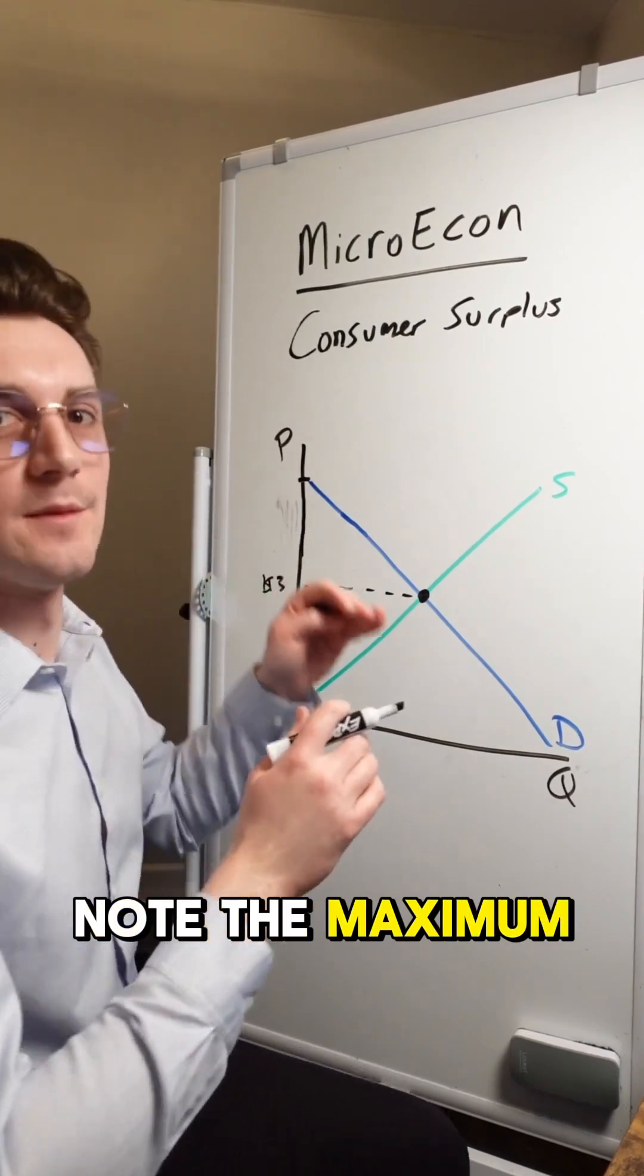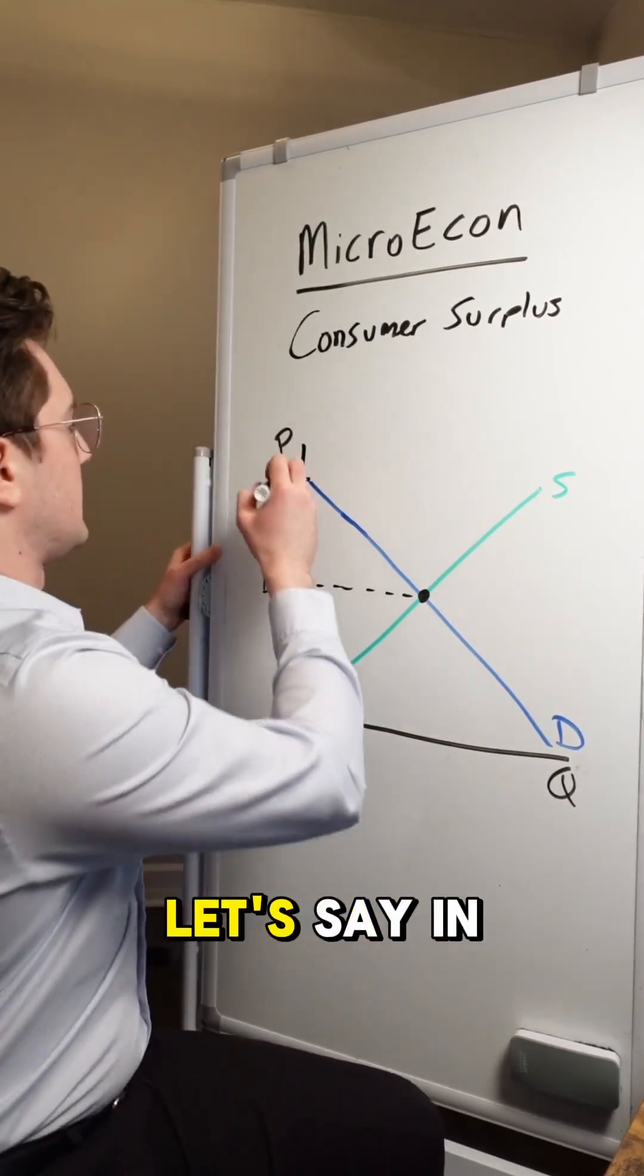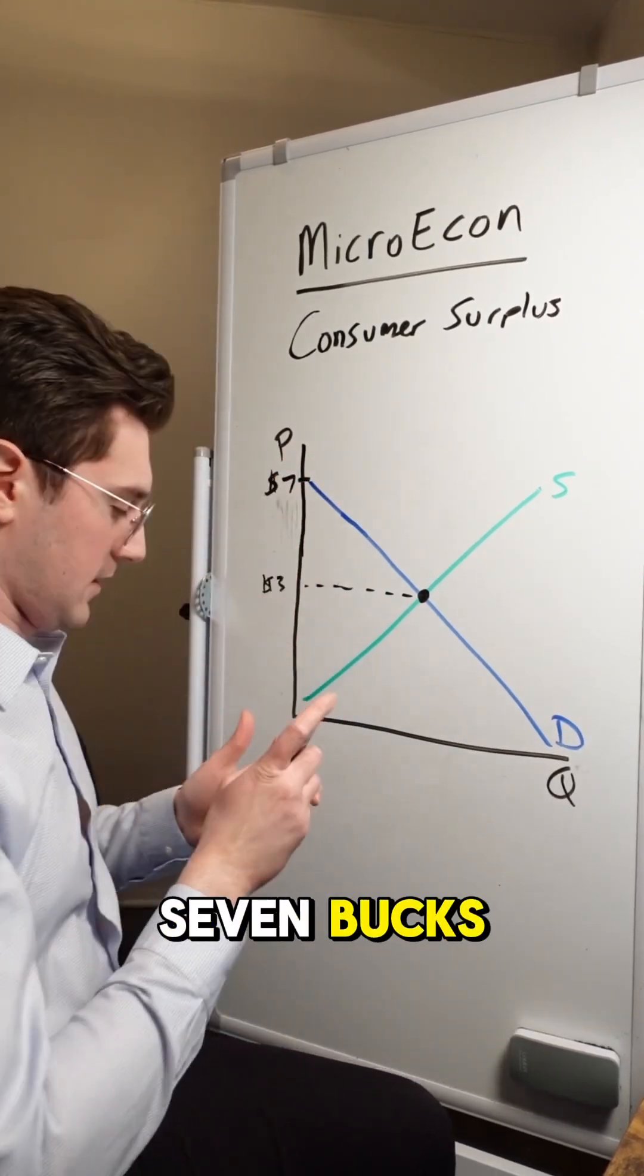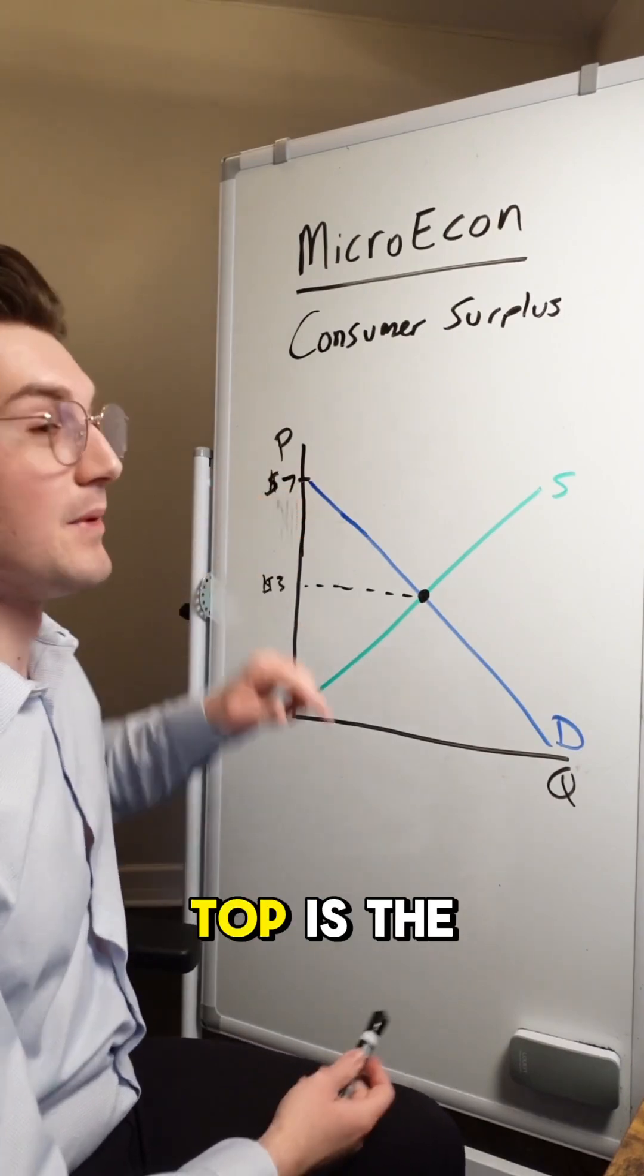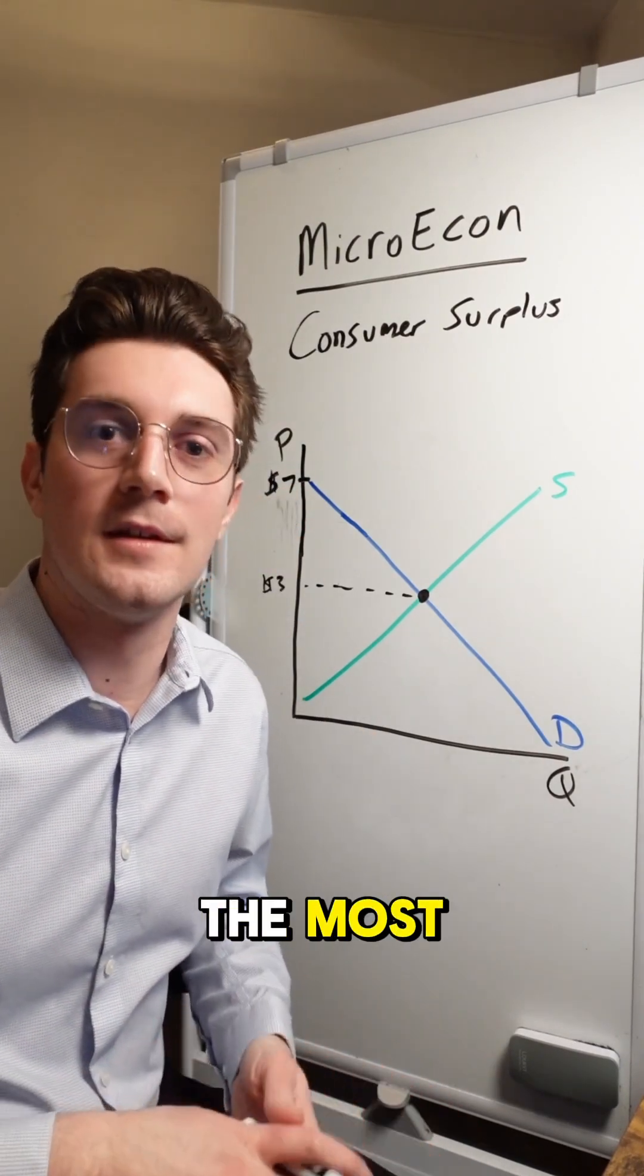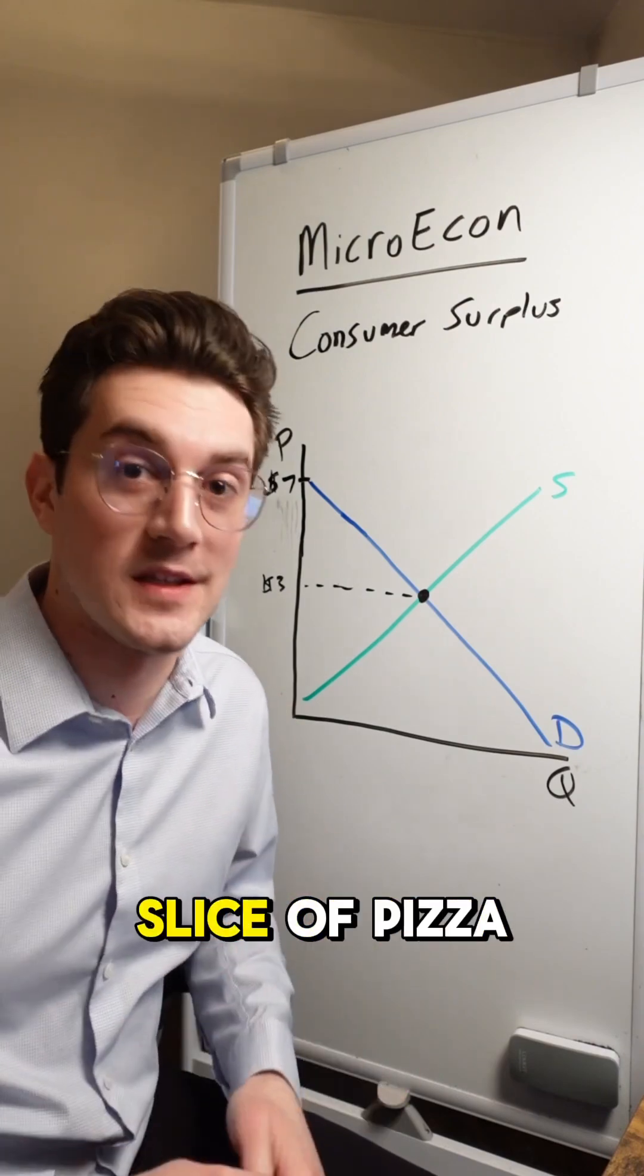Let's say in this case, it's seven bucks. This consumer right here right at the top is the person who wants to buy pizza the most, and they're willing to pay seven bucks for a slice of pizza.